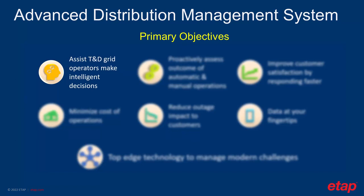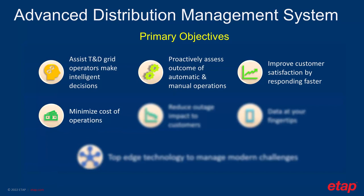It needs to provide information on how that will impact the customers, the stability, and power quality of the network. It must be able to proactively assess and predict the outcome of automatic and manual operations before they happen. It needs to support dispatchers to respond smarter and faster to improve customer service and maintain customer satisfaction. It must also minimize the cost of operations by reducing technical losses, as well as identifying non-technical losses in the system.